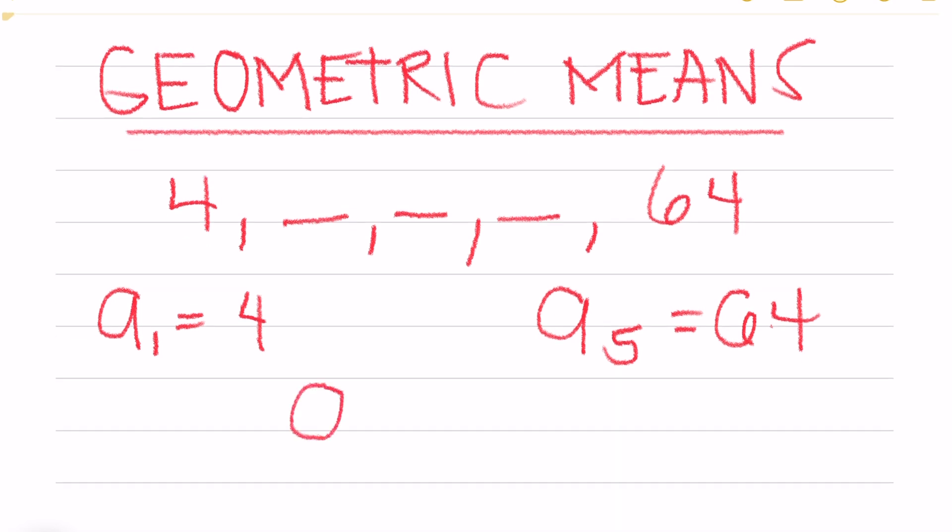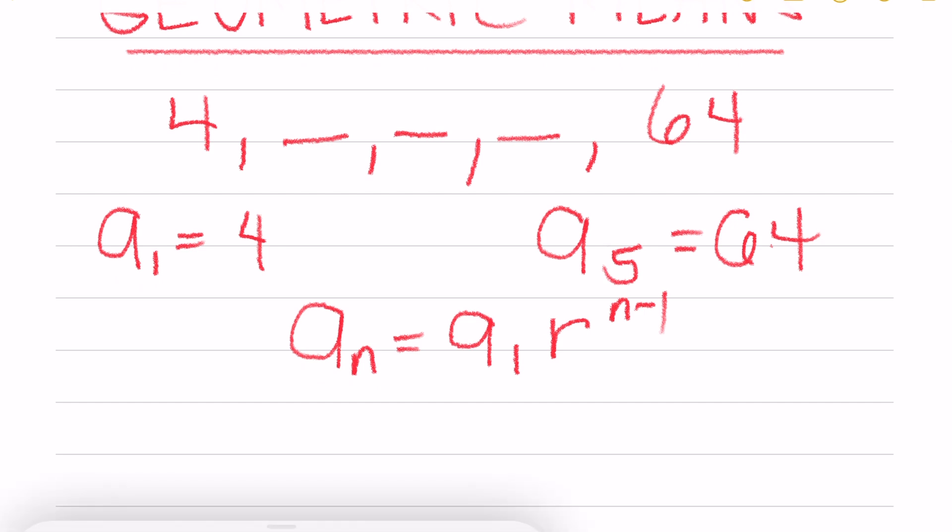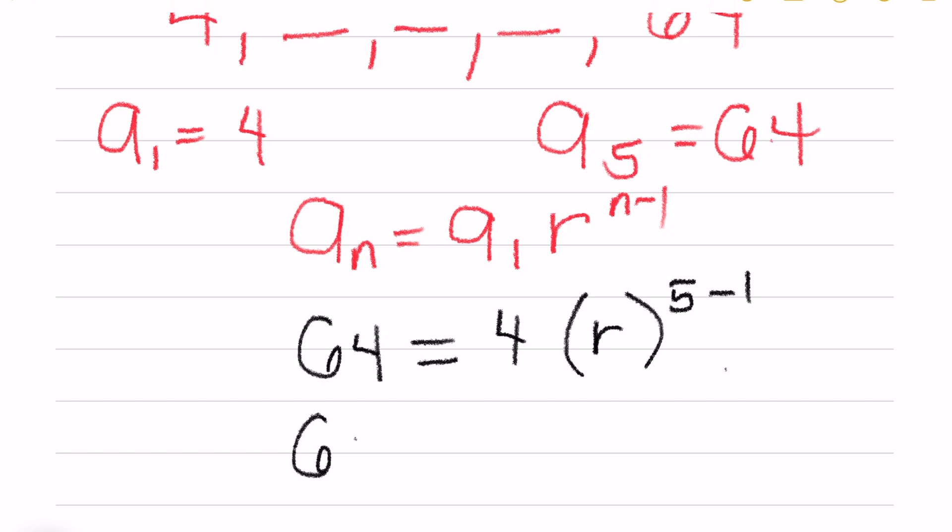Using the formula, a sub n is equal to a sub 1 times r raised to n minus 1. Substitute the given. Your a sub n is 64, equals the first term 4 times r raised to n minus 1. Your n is 5 because we have 5 terms. So 64 equals 4r raised to 4.